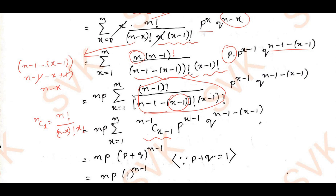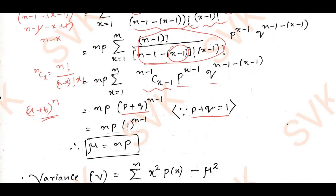This is of the form of a binomial expansion (p+q)^(n−1). As we know, the sum of probabilities of success and failure is always equal to 1, so p+q=1. Therefore 1^(n−1)=1, and multiplying by n·p gives μ = n·p. So the mean equals n·p.